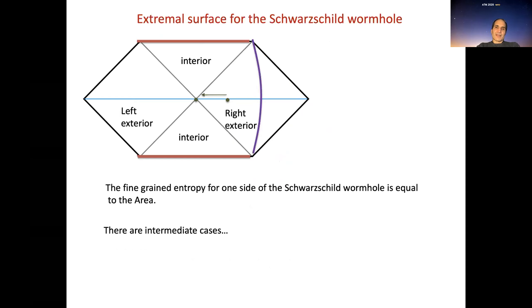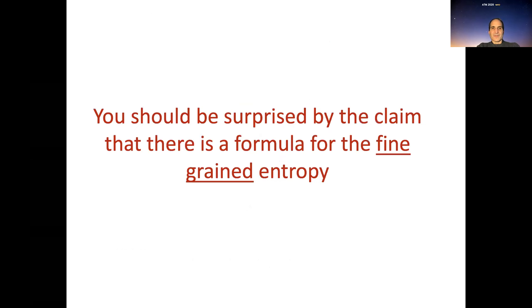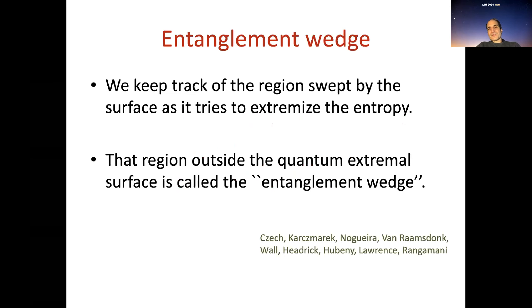For the Schwarzschild solution, the minimum is at the bifurcation surface, and in this case the fine-grained entropy is actually equal to the coarse-grained entropy, which is equal to the area of the horizon. You should be surprised by the claim that there is a formula for the fine-grained entropy — for systems like hydrodynamics it's very difficult to get such a formula — but for systems described by gravity, the gravity description gives us a nice formula for the fine-grained entropy.